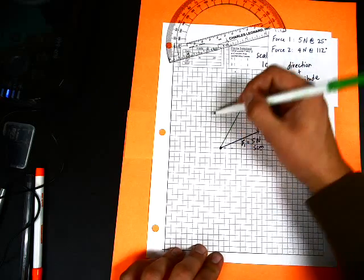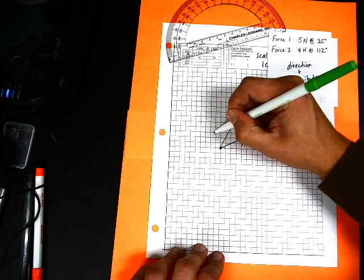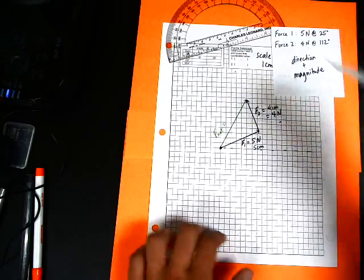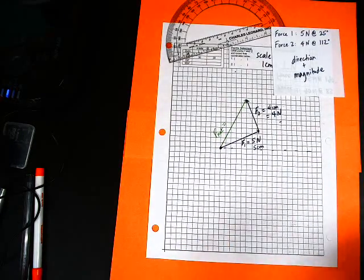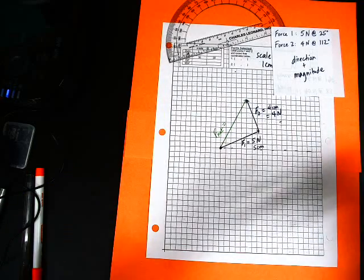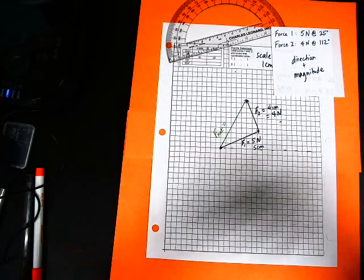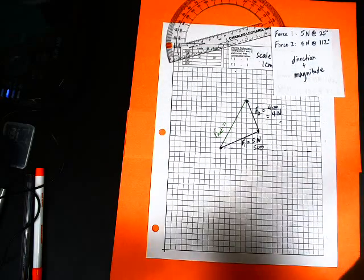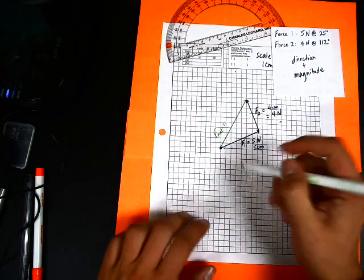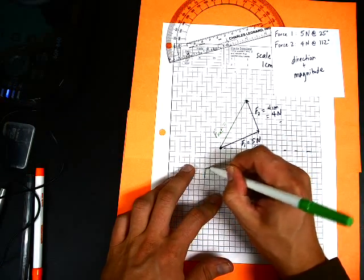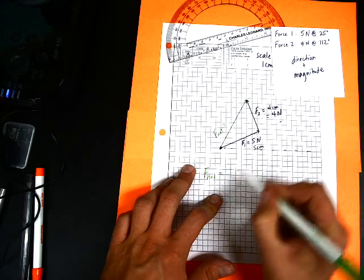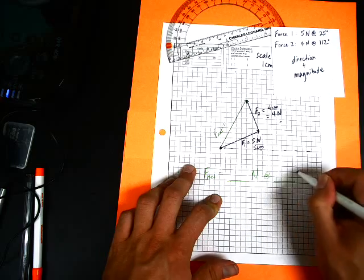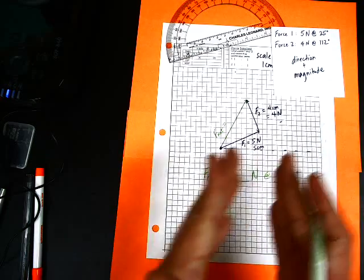And again, we need to label this. This is actually the most important one to label. This is our F net, our net force. Now remember, at the beginning I said each problem I want to know, or the point of these problems, is to find out what the strength, or excuse me, what the magnitude, and what the direction of that net force is. So whenever you turn in a problem, you should have something like, okay, F net equals blank newtons at blank degrees, direction and magnitude.